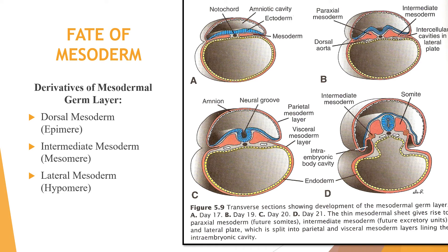For the fate of the mesoderm, the derivatives of the mesodermal germ layer include: the dorsal mesoderm or epimere, the intermediate mesoderm or mesomere, and the lateral mesoderm or hypomere. The transverse section shows the development of the mesodermal germ layers at day 17, day 19, day 20, and day 21. The thin mesodermal sheath gives rise to the parietal mesoderm or future somites, the intermediate mesoderm for the future excretory units, and the lateral plate, which will split into parietal and visceral mesoderm layers lining the intraembryonic cavity.